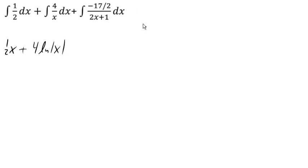Here this one might require a little more work because of the 2x plus 1 in the bottom. We can pull out the negative 17 halves, get it out of the way, and we're integrating 1 over 2x plus 1 dx. Technically we're going to be using a substitution here. So we're going to let u equal 2x plus 1, du equals 2 dx, so dx is du over 2.